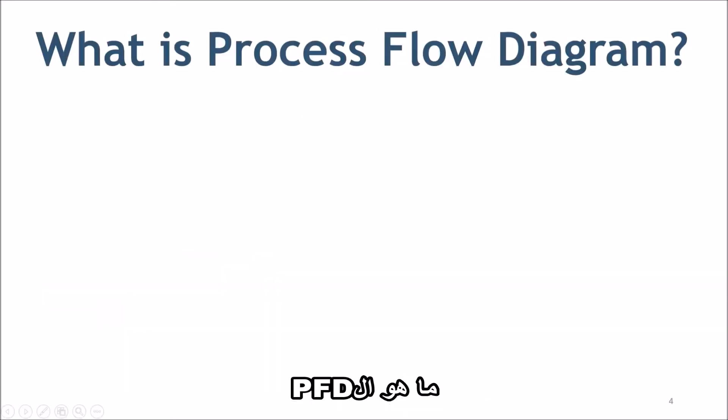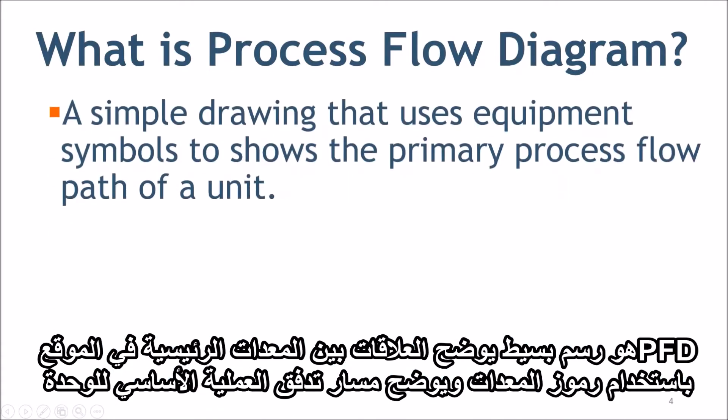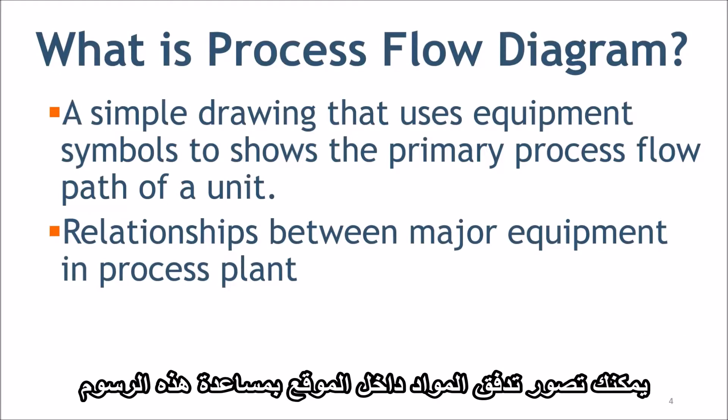A Process Flow Diagram is a simple drawing that shows the relationship between major equipment in a process plant using equipment symbols and shows the primary process flow path of a unit. You can visualize the flow of material within the plant with the help of this drawing.